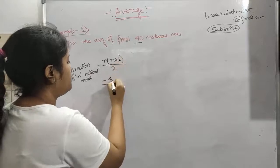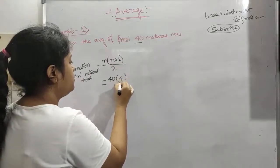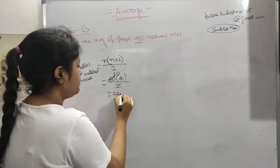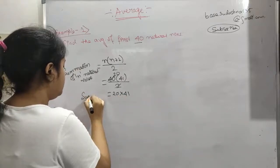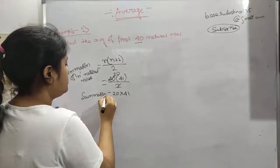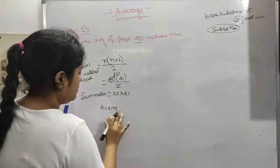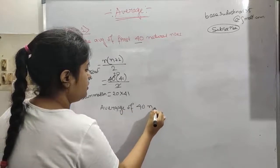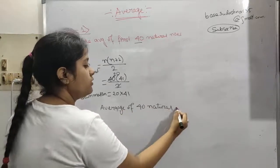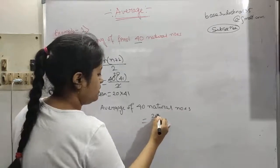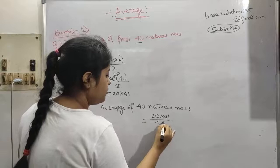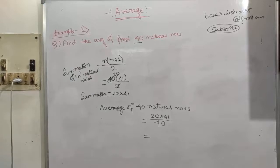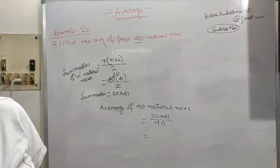For n=40, we get 40 into 41 divided by 2, which is 820. So 20 into 41 is our summation. Now we have to find the average of 40 natural numbers, which is 20 into 41 divided by 40. The answer is 20.5.